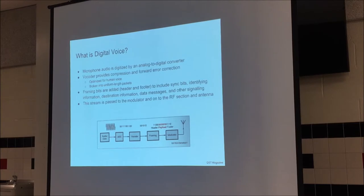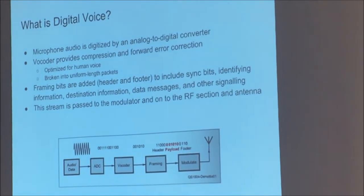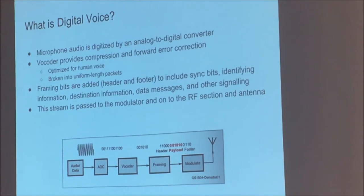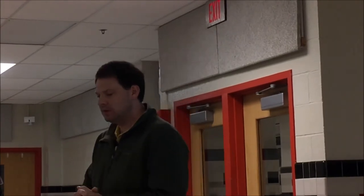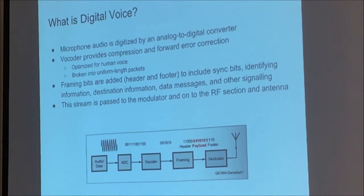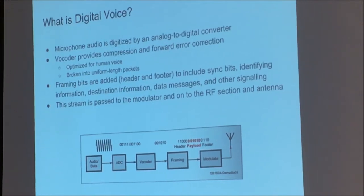In comparison to analog FM, when you transmit on a DMR radio your voice is digitized by an analog-to-digital converter and vocoded for compression. At that point it becomes bits and bytes going over the air until it comes out of a speaker on the other end. A QST diagram from 2015 illustrates this basic path: audio is digitized, goes through a vocoder, framing bits are added, then it's modulated and hits the antenna.